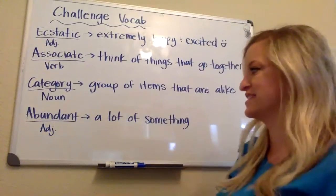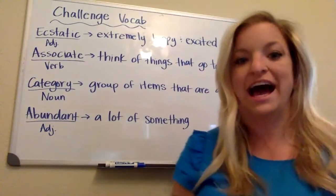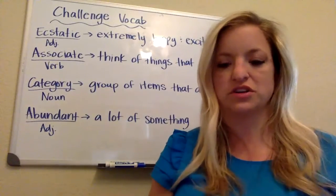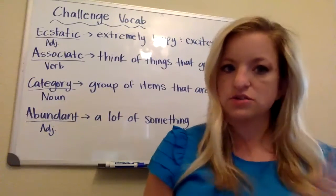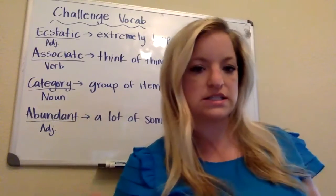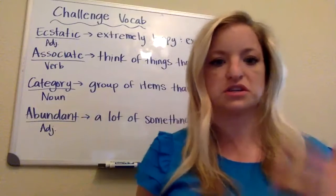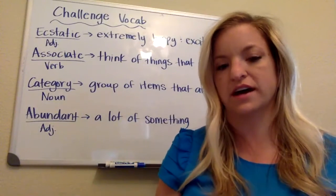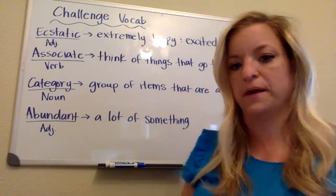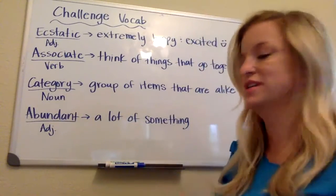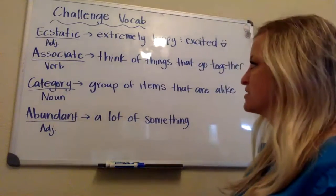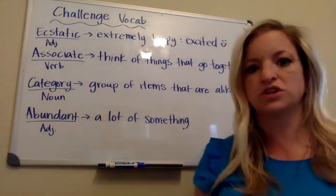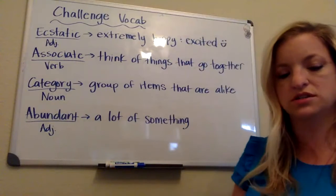You have a lot of something — and that's an adjective. You can use it as abundant or abundance, like there's an abundance of something, using it in a different context. So those are your four challenge words.